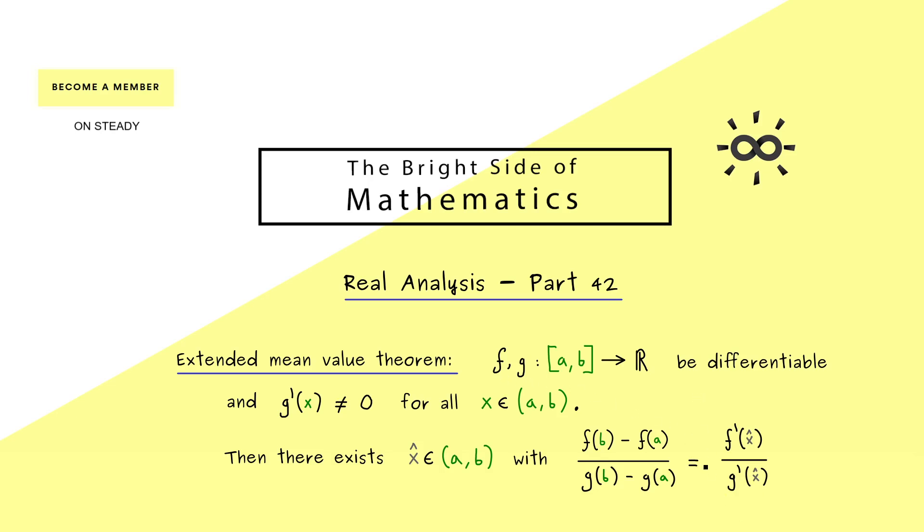More importantly you should see that this actually extends the mean value theorem from the last video. Because you can simply choose g to be the identity so the linear function x. We see this immediately because in this case the derivative would be the constant 1. And then indeed f'(x̂) is the normal mean slope.